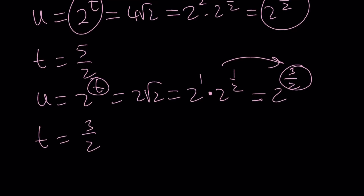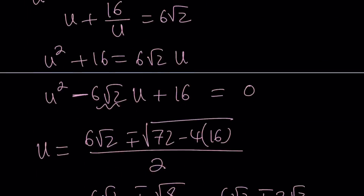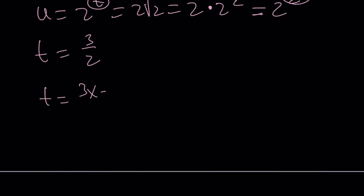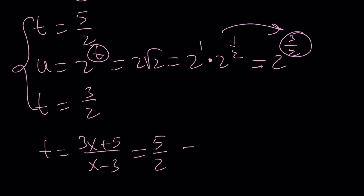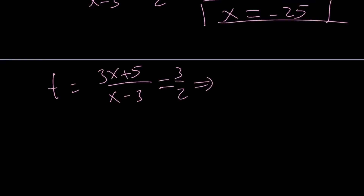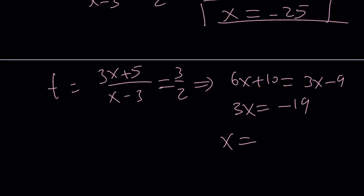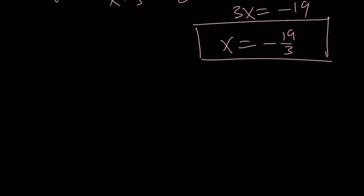Now t is also a substitution — t equals (3x+5)/(x-3). Setting this equal to 5/2 and cross-multiplying: 6x+10 = 5x-15, giving x = -25. Doing the same with t = 3/2: 6x+10 = 3x-9, and we get x = -19/3. So our solution set is {-25, -19/3}.